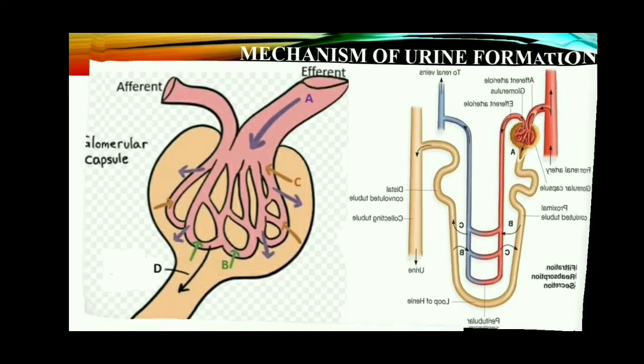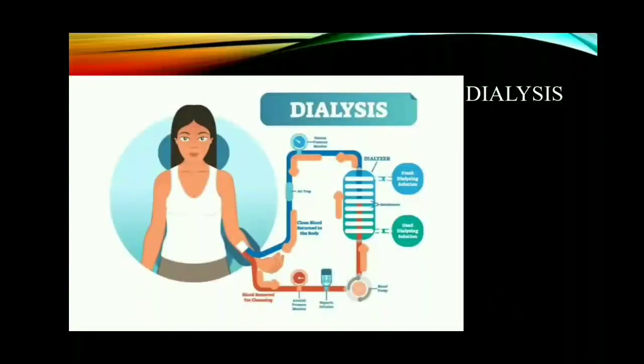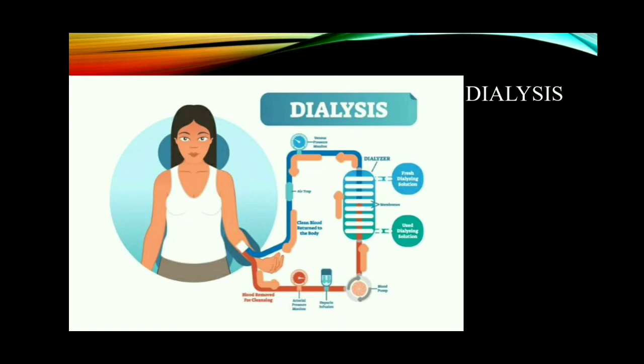Dialysis or artificial kidney: when kidneys fail to perform their function or lose their filtering efficiency, excessive amounts of waste materials accumulate in the body, which can even lead to death. This condition is called renal failure. For this, an artificial kidney is used to filter the blood of the patient. The patient is said to be put on dialysis, and the process of purifying the blood by an artificial kidney is called hemodialysis. When renal failure cannot be treated by drugs or dialysis, patients are advised for kidney transplantation.